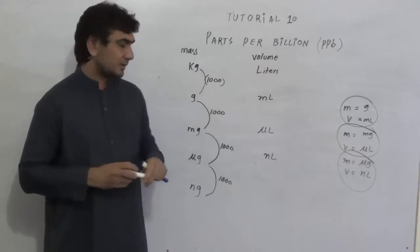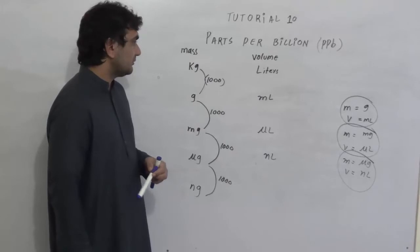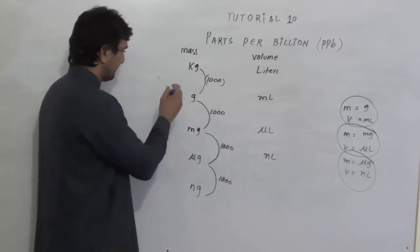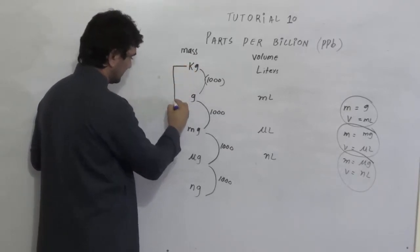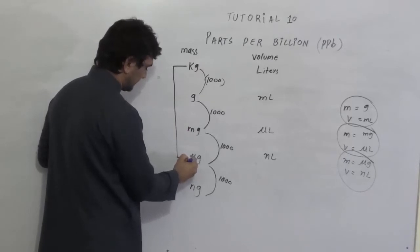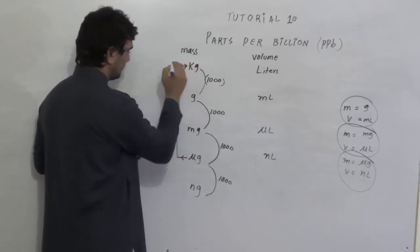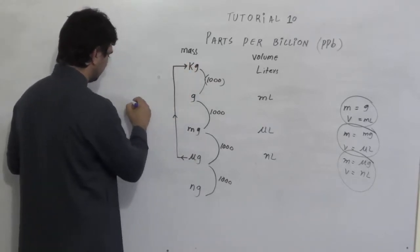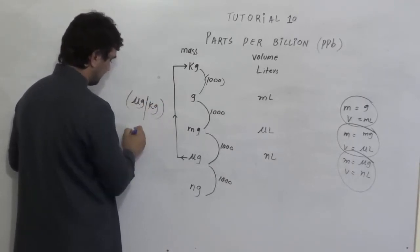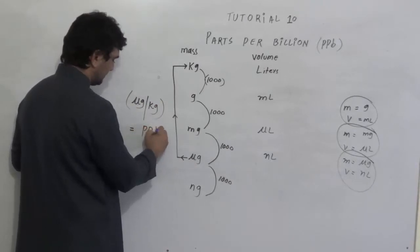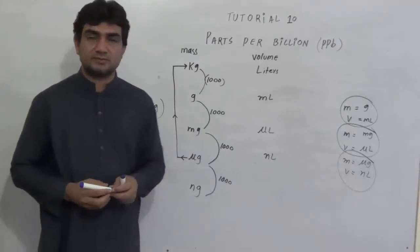If we consider parts per billion, we can say that we have mass of solution in kilograms and micrograms of solute per kilogram of solution. Microgram per kilogram is referred to as 1 part per billion in weight by weight concentration.